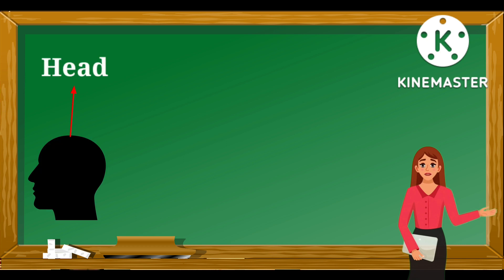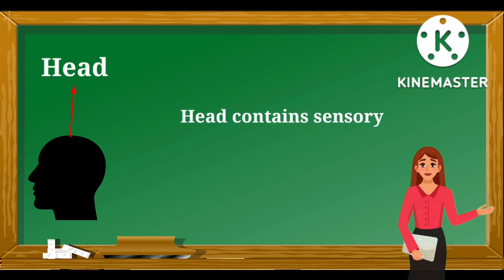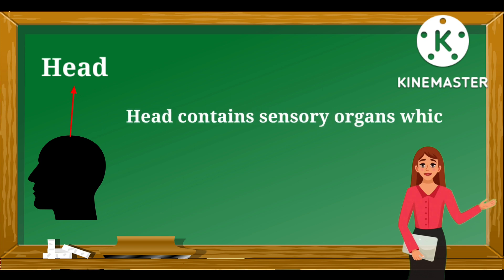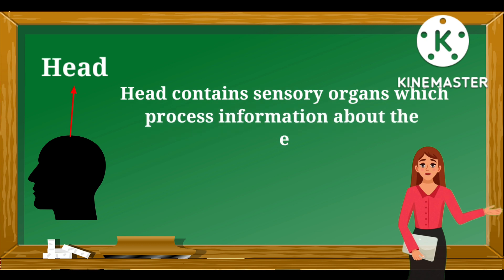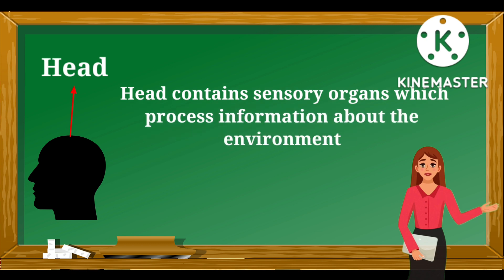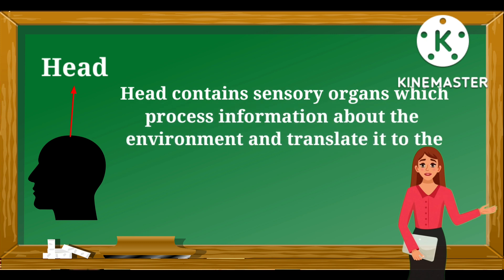So let's know the names of these parts without any further delay. This is a head — H-E-A-D. It is located in the upper portion of the body. The head contains sensory organs which process information about the environment and translate it to the brain.